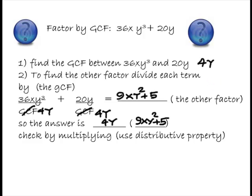So, number one, find the GCF. The GCF should be 4y. In order to find the other factor, divide each term by the GCF. So, we have to take 36xy cubed and divide it by 4y, and take 20y and divide it by 4y. When I divide, I get 9xy².